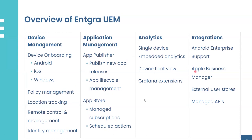Now let's look at Integra UEM. To handle these tasks, we have three different portals: one for device management and two separate portals for application management. The device management portal is called the Endpoint Management Portal, and the other two portals are the Publisher Portal and Desktop Portal. The Endpoint Management Portal is where you can onboard Android, iOS, or Windows devices, enforce policies for device security, track device locations, remotely control or troubleshoot devices, and manage user identities.